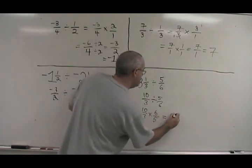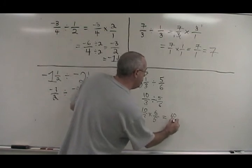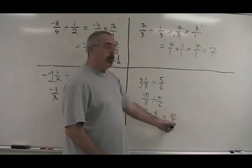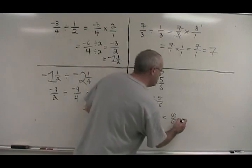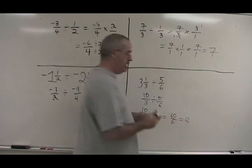10 times 6 is 60. 3 times 5 is 15. 60 over 15. 15 goes into 60 exactly 4 times. Our answer is 4.